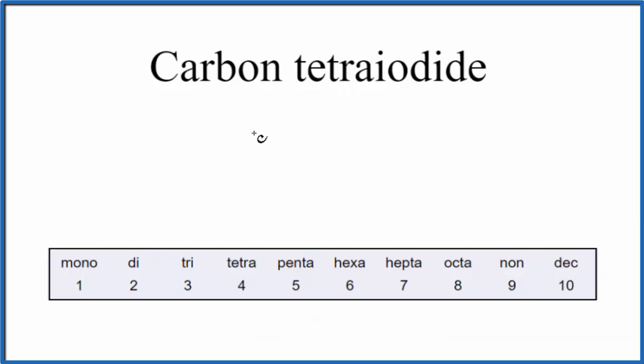So we have carbon, that's just C. There's a one here, but we don't write it. And then tetraiodide. So we have iodine, and that tetra means four. So we'll have four iodine atoms.